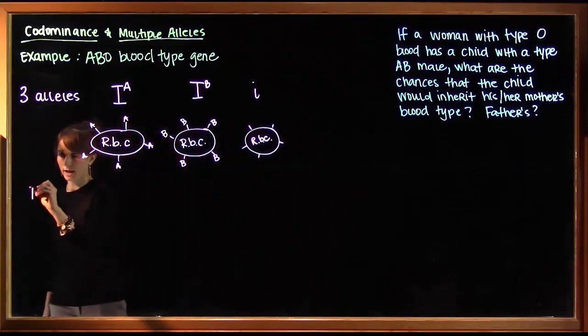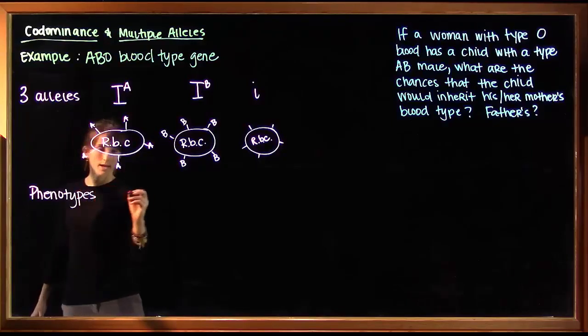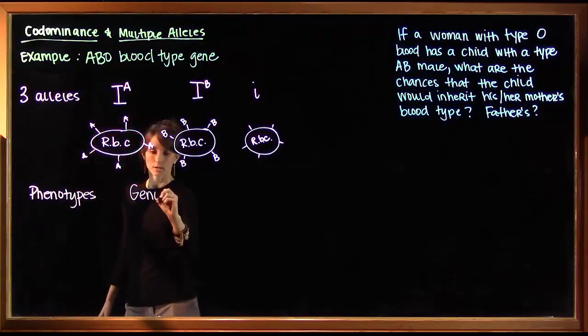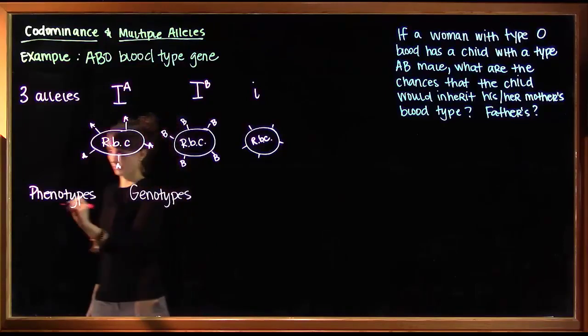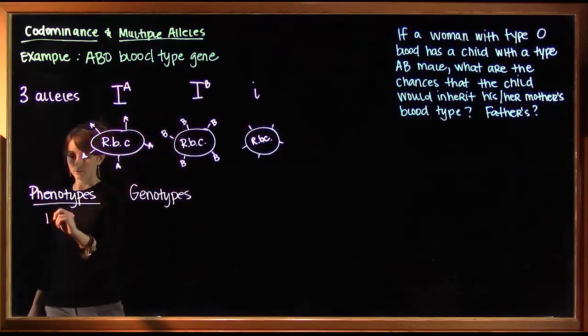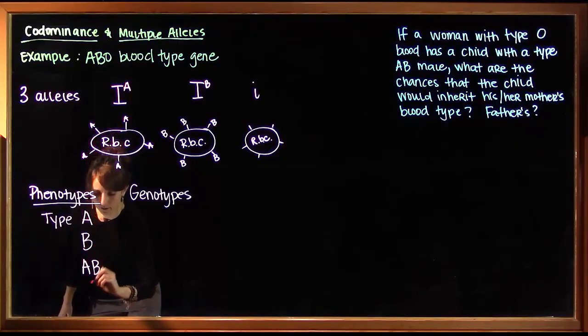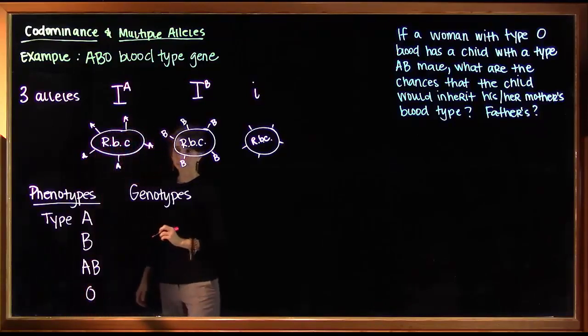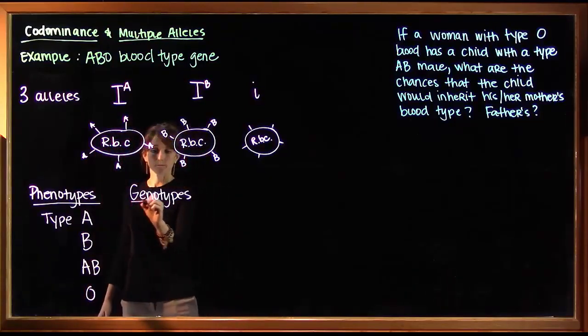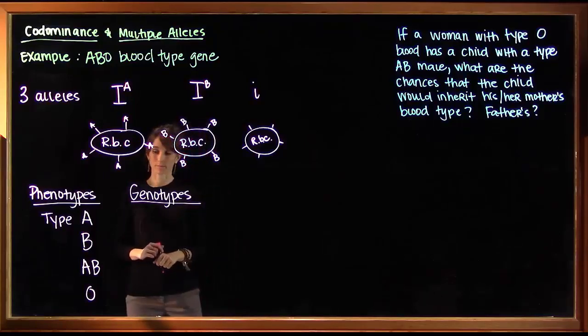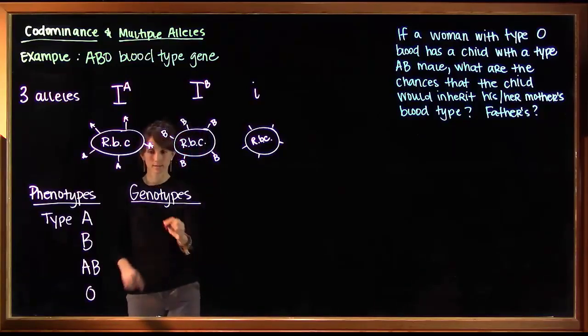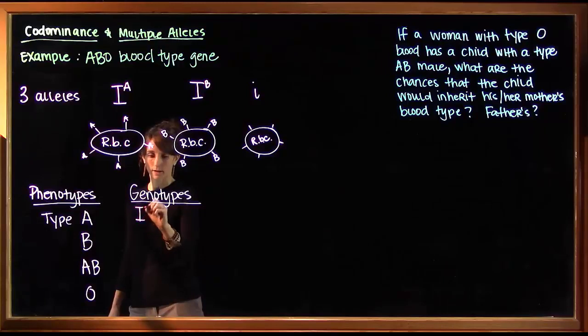Let's look at the four possible phenotypes and their associated genotypes. A person could be type A, type B, type AB or type O. And if a person has type A blood, there are two possible genotypes. They might be homozygous, in which case they would have big I, A, big I, A. Or they could be heterozygous, big I, A with a little i.